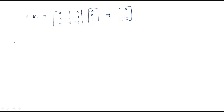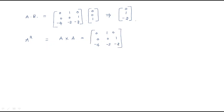Now we need A²B. For that, first find A² = A × A, then multiply with B. Matrix A is [0,1,0 / 0,0,1 / -4,-3,-2], and we multiply this matrix with itself again.